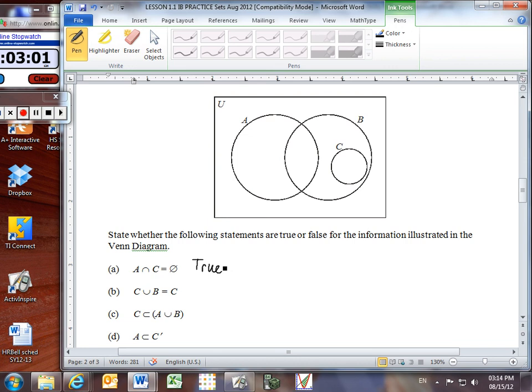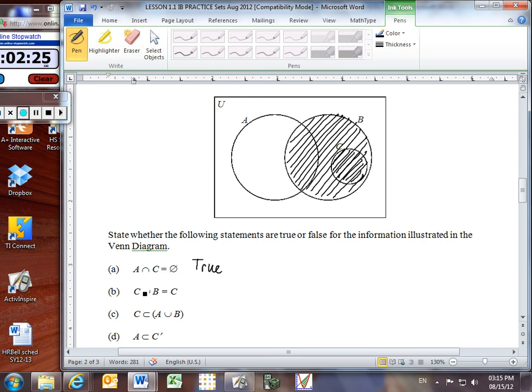Part B. Is it true that the union of C and B is the same thing as set C? So when I'm doing a union, one effective technique is just to shade both C and B. Let's shade C. There, that's everything inside set C. And now let's shade B. That's everything inside set B. And everything that's been shaded belongs to C or B. Is my shaded region the one I've just created? Is that the same thing as set C? No, definitely not. Set C is a lot smaller than what I've just shaded. So this is a false statement.